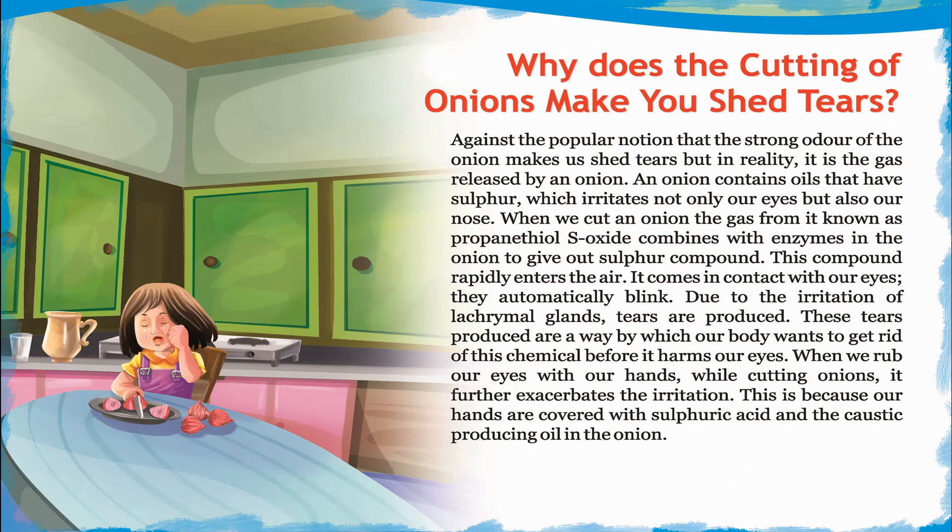When we cut an onion, the gas from it known as propanethiol S-oxide combines with enzymes in the onion to give out a sulfur compound. This compound rapidly enters the air and comes in contact with our eyes. They automatically blink due to the irritation of the lacrimal glands, and tears are produced.